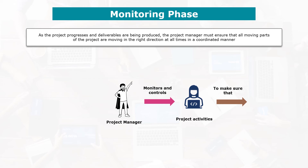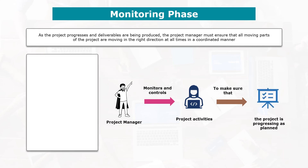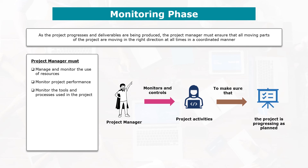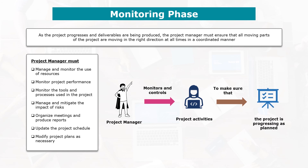During the monitoring and controlling phase, the project manager may have to manage project resources, monitor project performance, monitor the tools and processes used in the project, manage project risks, organize project meetings, produce project progress reports, update the project schedule, and edit or update project plans.